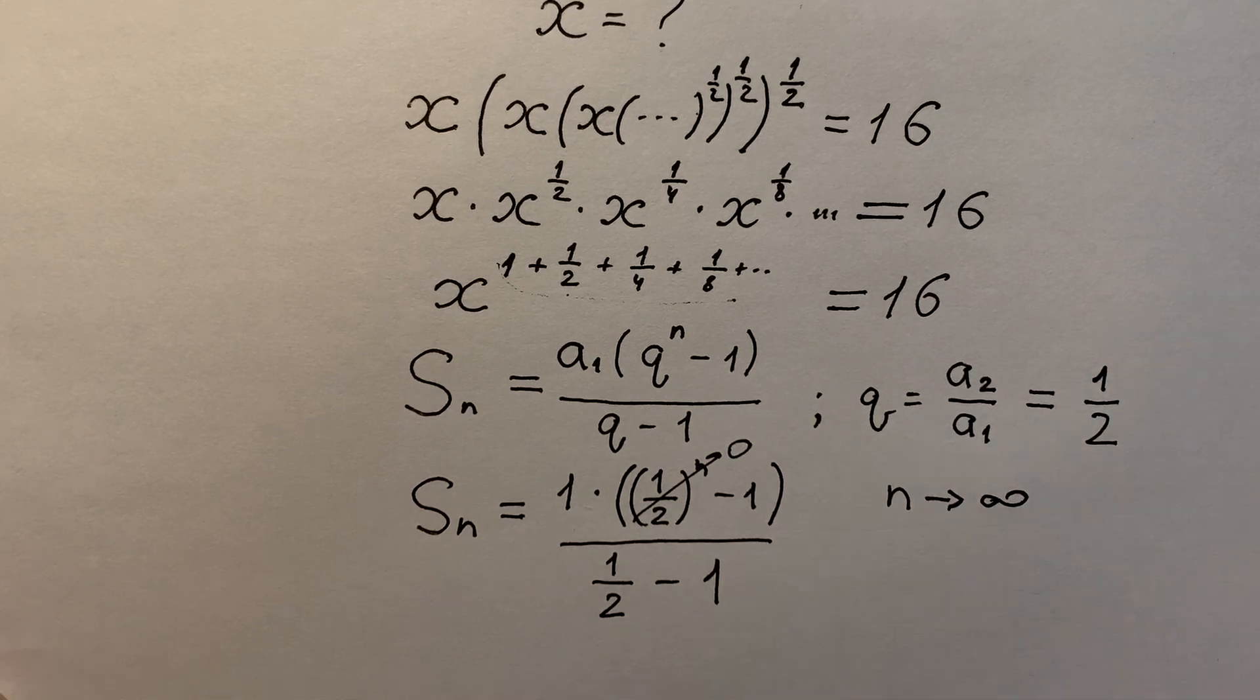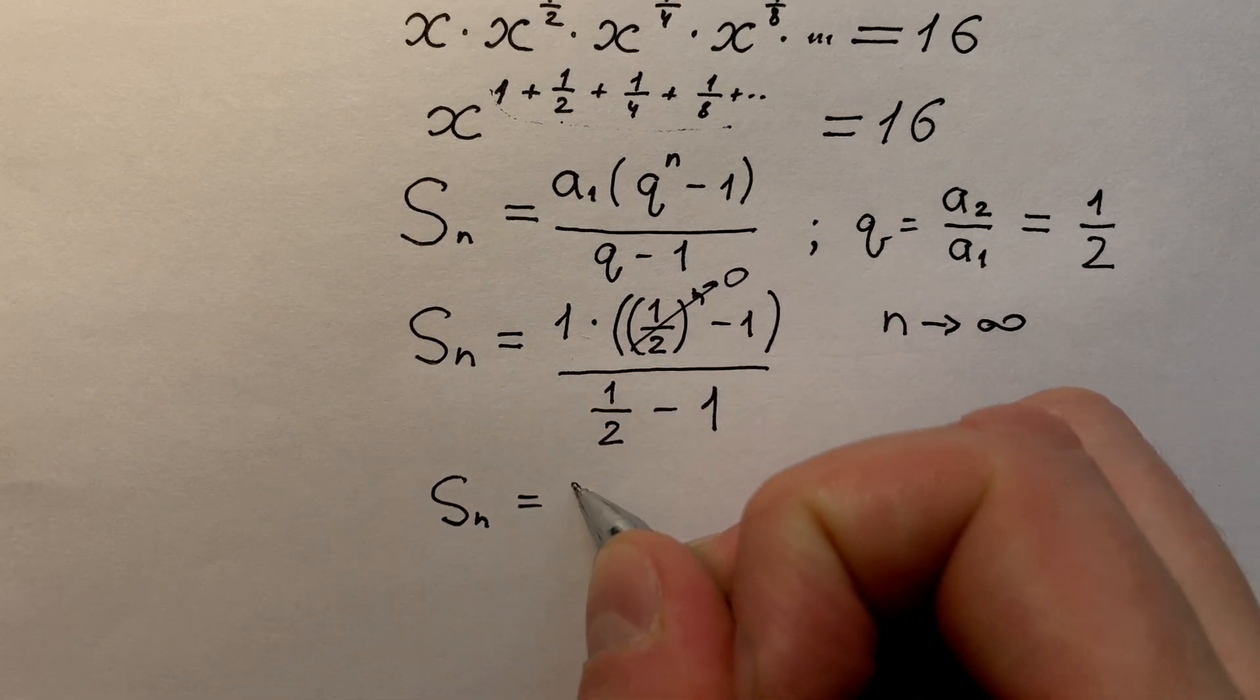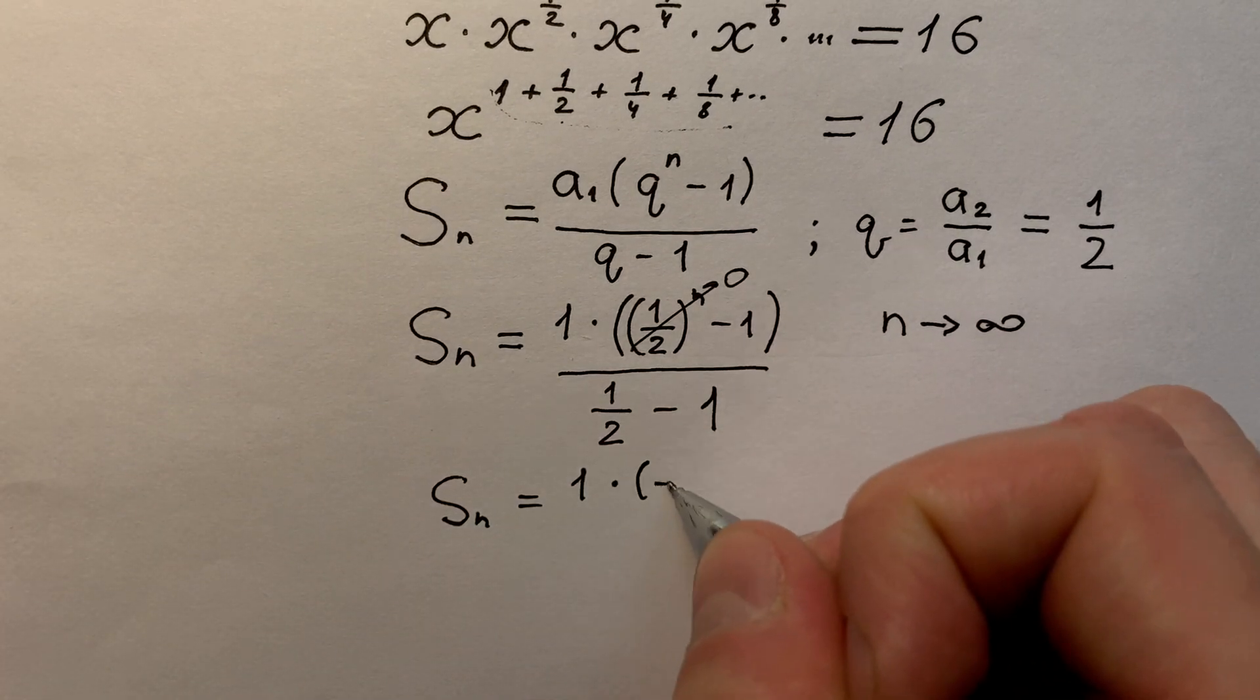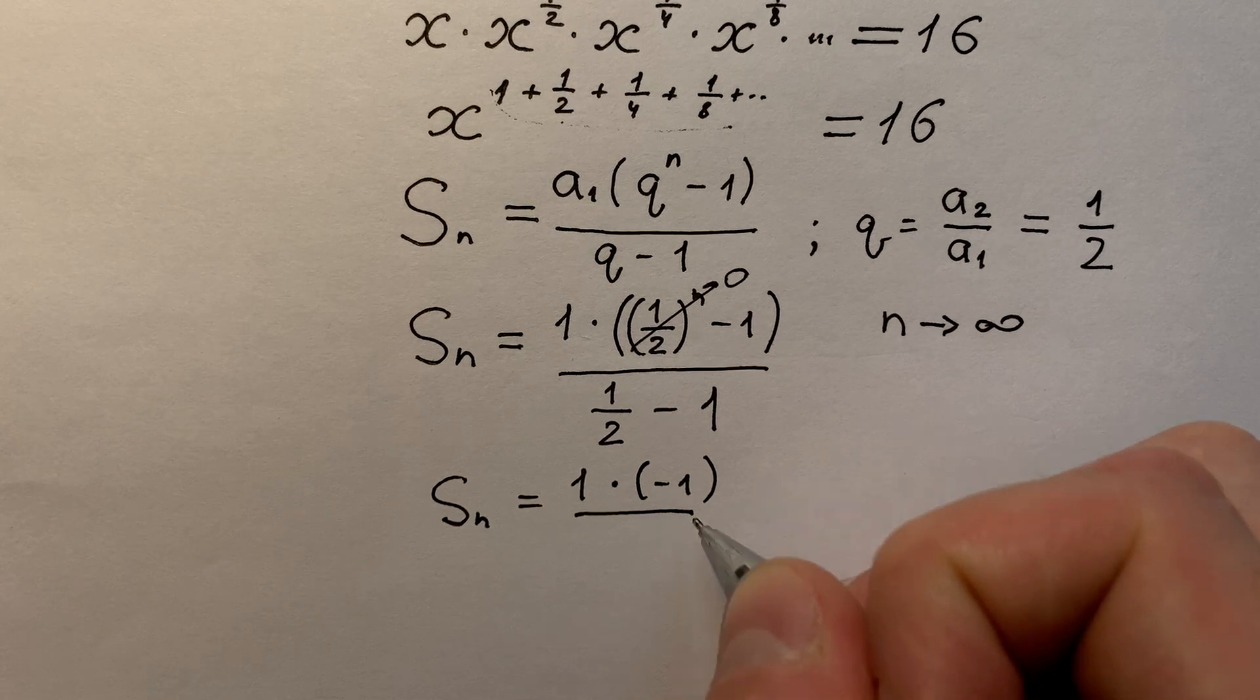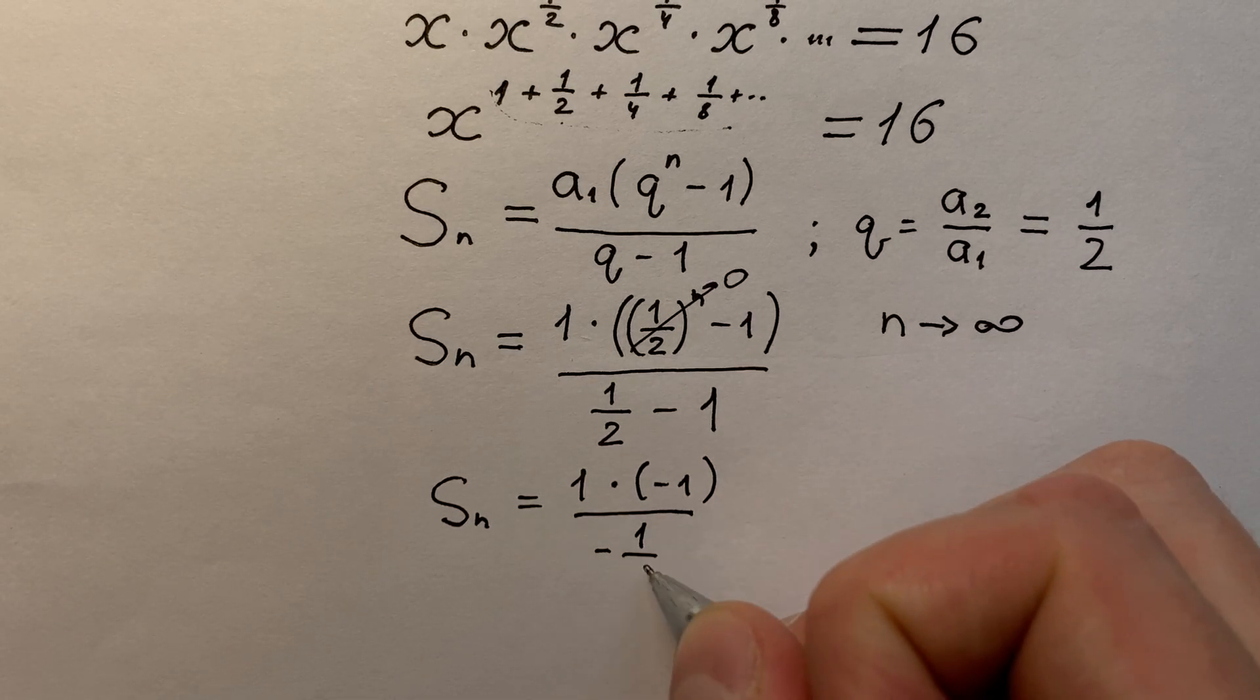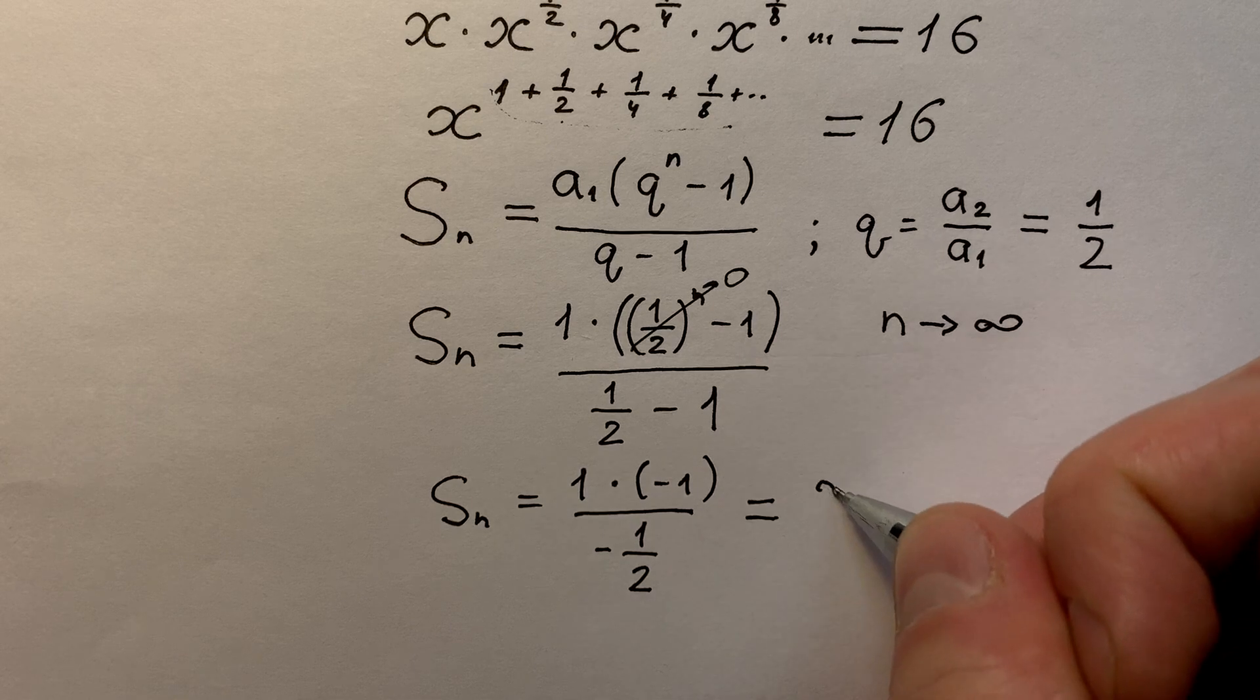That's why we have that our sum equals to 1 times minus 1 divided by minus 1/2, and of course it equals to 2.